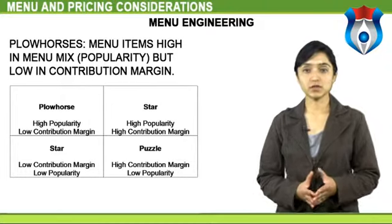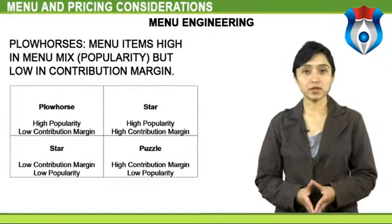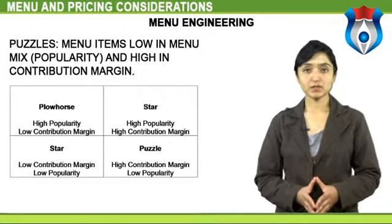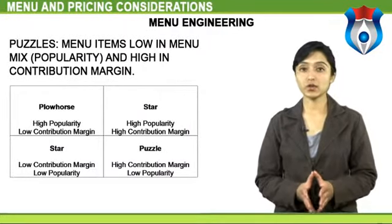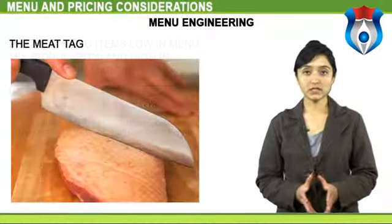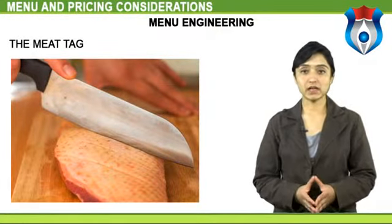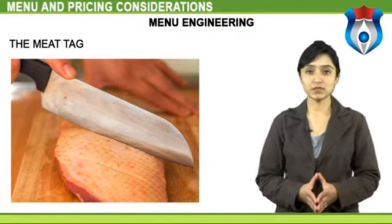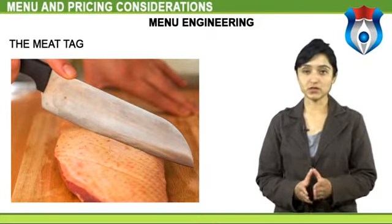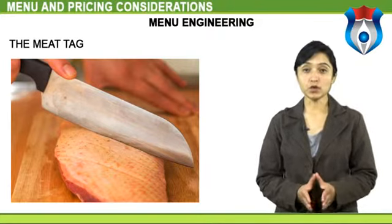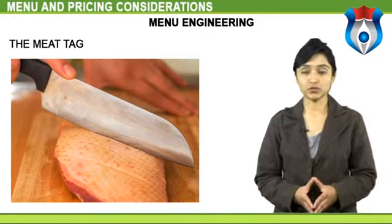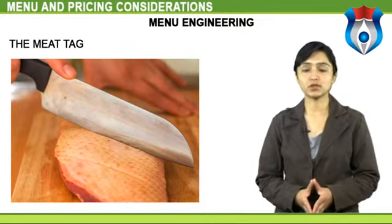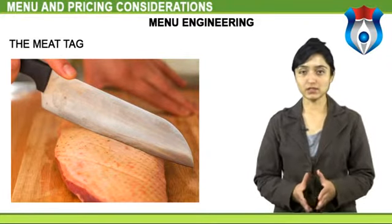Plow horses — menu items high in menu mix popularity but low in contribution margin. Puzzles — menu items low in menu mix popularity but high in contribution margin. In the majority of catering establishments, items such as meat, special processed meats like hams, and fish such as smoked salmon constitute the most expensive purchased foods. Because of this high cost, it is not uncommon for units operating a detailed control system to set up a special form of control for these items.